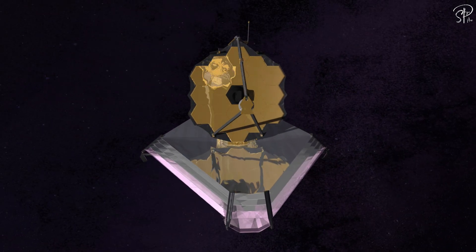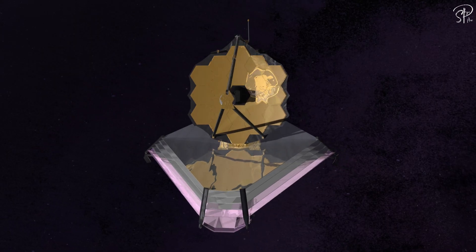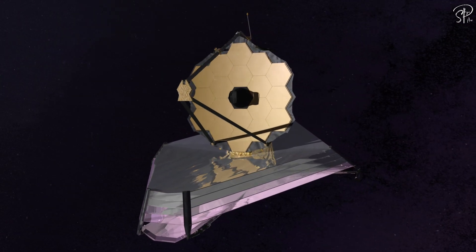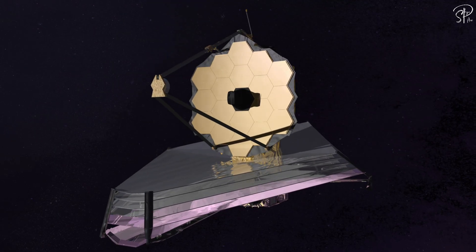In space, there is no atmosphere and nearly no gravity or microgravity. That brings us to the question, where will James Webb telescope be placed in space?